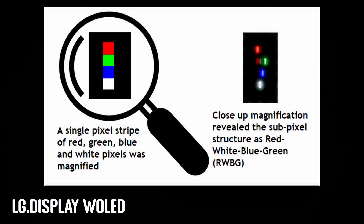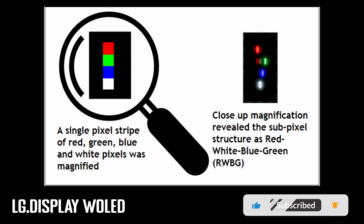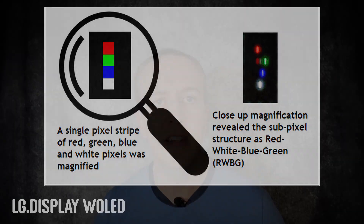OLED monitors, or at least the mainstream and gaming models being released at the moment, have what I would call unusual sub-pixel structures. The so-called W-OLED or white OLED panels from LG Display, commonly used in most OLED televisions and some new monitors, have an unusual red, white, blue, green sub-pixel layout — RWBG. There's an additional white sub-pixel added to help increase brightness, but it's also not a normal RGB layout. So that's the LG Display W-OLED panels.